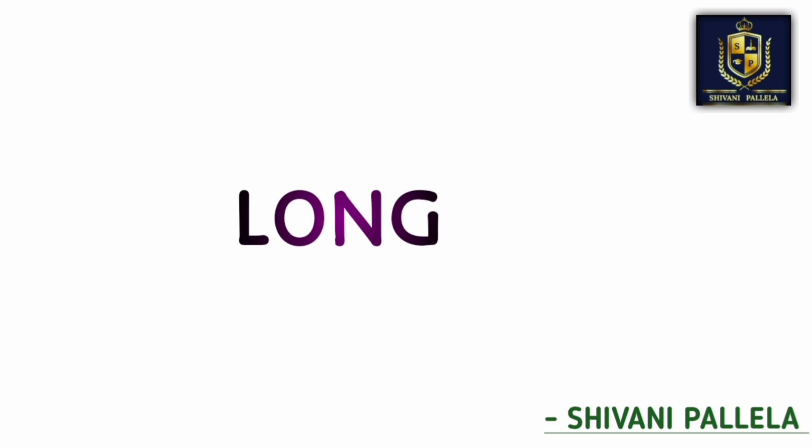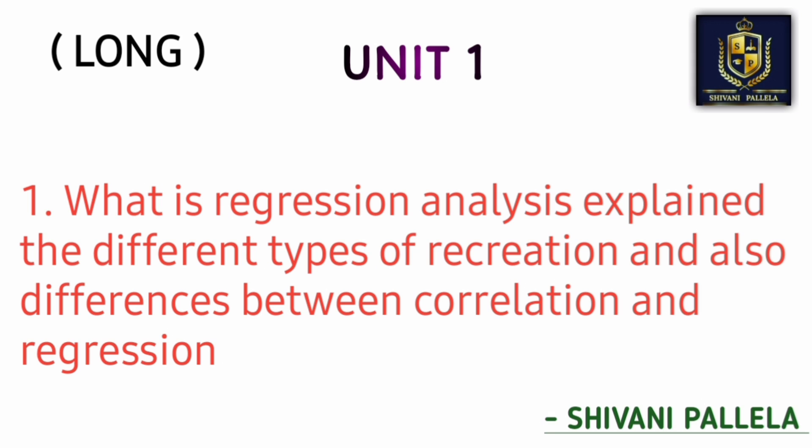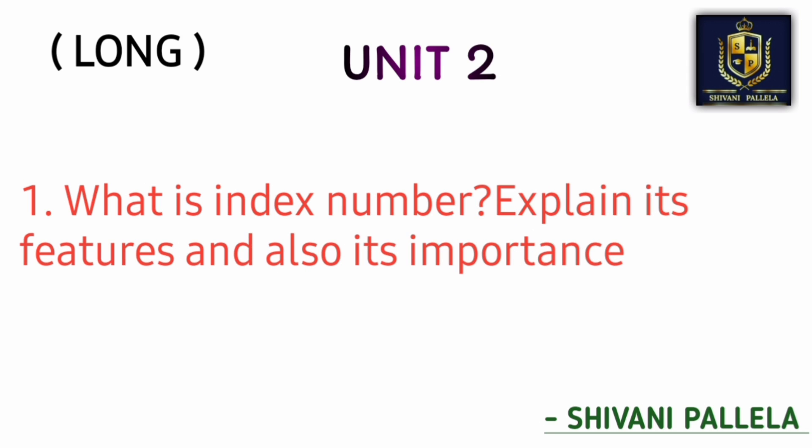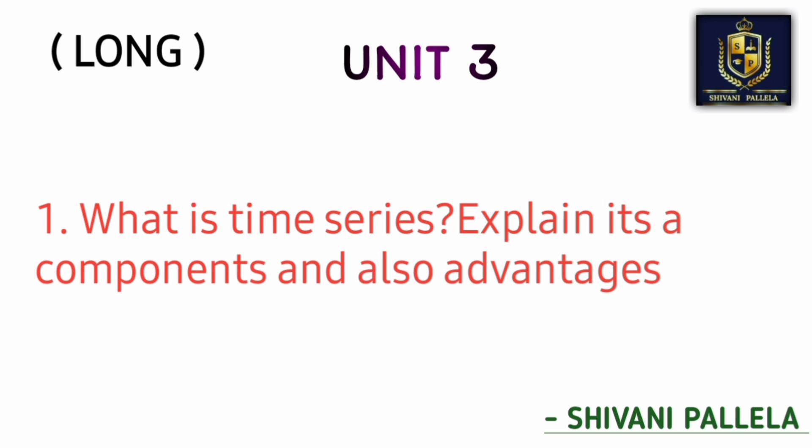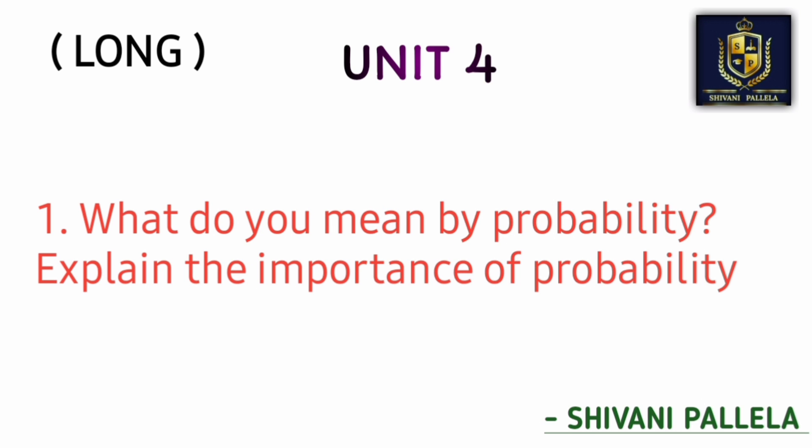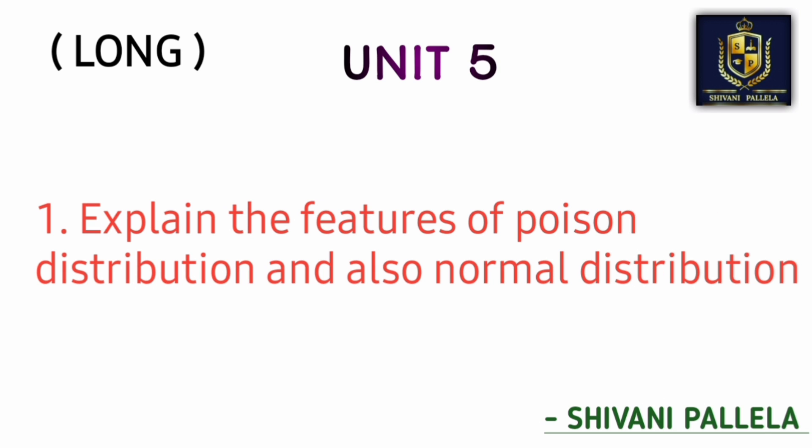For long theory questions, there is very little chance of theory being asked, except in Unit One. My suggestion is to go with problematics only, because theory questions have less chance of appearing. The passing mark is 36, and you should attempt 60 to 70 marks worth of questions to pass. In Business Statistics Two, you will get hardly one or two theory questions — mostly only one question in Part B.